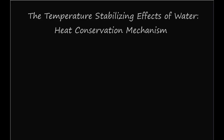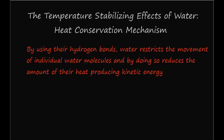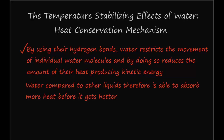A third property making water so important in biology is its ability to stabilize temperatures. Water achieves this effect via two mechanisms: one involves heat conservation while the other involves heat loss. By using their hydrogen bonds, water restricts the movement of individual water molecules and by doing so reduces the amount of heat produced by kinetic energy. Water, compared to other liquids, is therefore able to absorb more heat before it gets hotter.